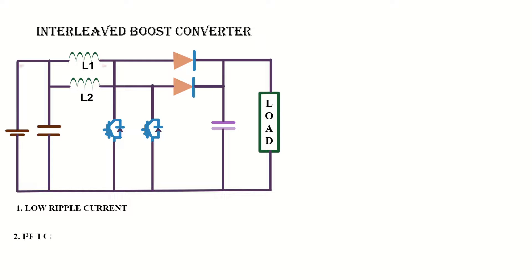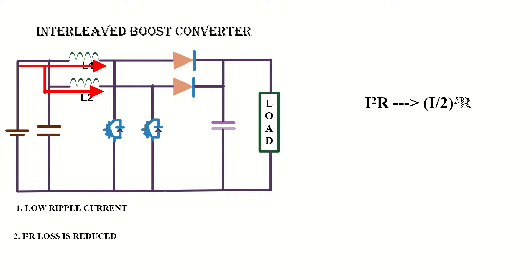The second advantage is that by splitting the current through two different paths, the overall I-squared-R loss is reduced. That is, if the initial loss is I²R, then the loss becomes (I/2)²R. Since we divide the total current into 2, the stress on each device can also be minimized.